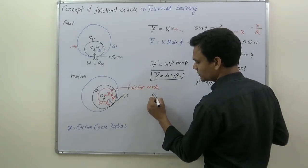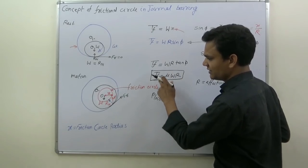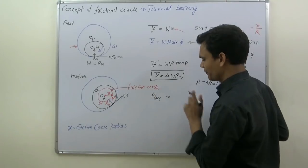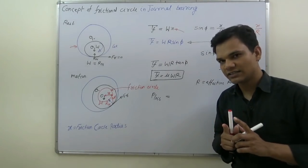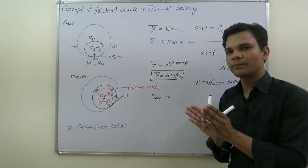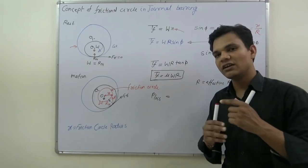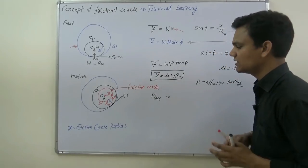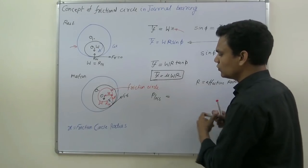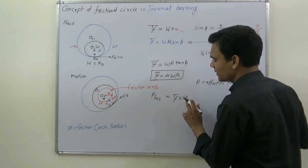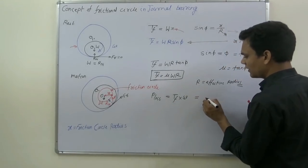To calculate power loss: in a bearing, friction causes power loss, whereas in a clutch, frictional torque is responsible for transmitting power. The formula for frictional torque is the same for both clutch and bearing, but their roles are opposite. In a bearing, increasing friction increases power loss; in a clutch, increasing frictional torque increases power transmittance capacity. The power loss formula is: Power loss = T_f × ω, where ω is the angular speed of the shaft.